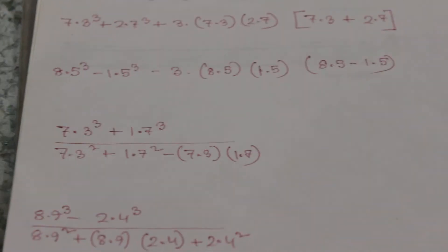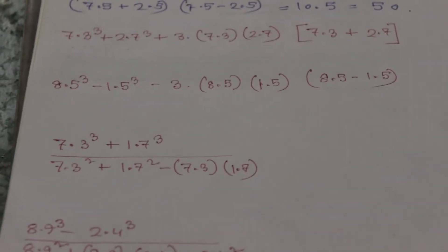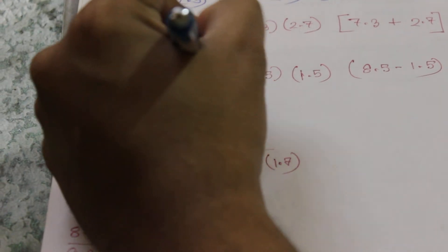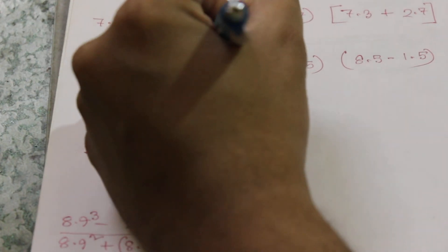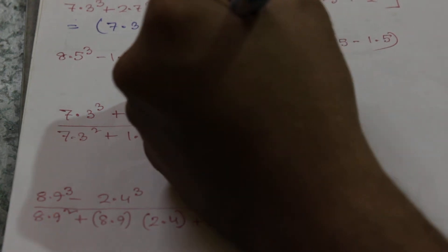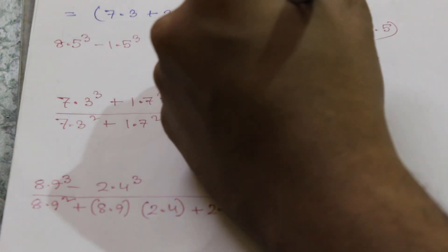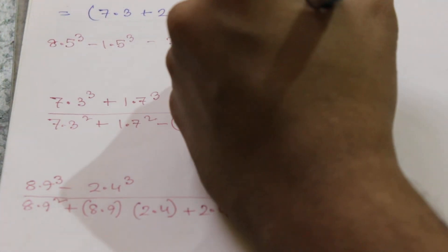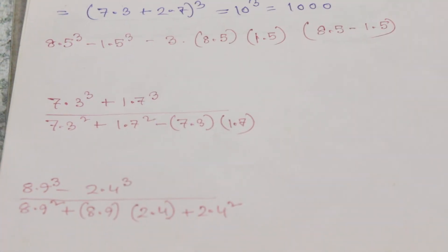The next example uses the cube formula — a cube plus b cube plus 3ab into (a + b). We will use formula 6, so this equals (7.3 + 2.7) whole cube, which is 10 cube. The result will be 1000.